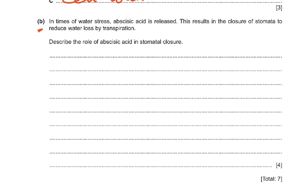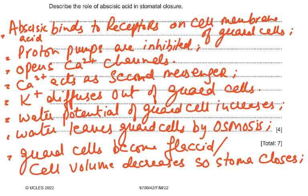Part B says: in times of water stress, abscisic acid is released, resulting in closure of stomata to reduce water loss by transpiration. Describe the role of abscisic acid in stomatal closure — four marks. Abscisic acid binds to receptors on the cell membrane of the guard cell. Proton pumps are inhibited, which opens calcium channels. Calcium acts as a second messenger. Potassium ions diffuse out of the guard cells, water potential of the guard cell increases, water leaves by osmosis, the guard cells become flaccid, cell volume decreases, and the stoma closes.